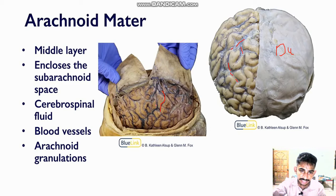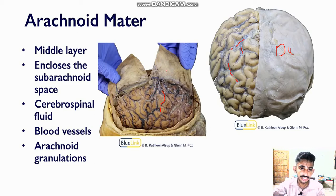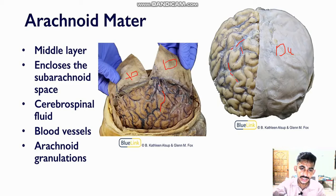So these are actually blood vessels which are suspended in arachnoid mater and are clearly visible when we pull on the dura mater. This is the dura mater, and these are actually blood vessels in arachnoid mater.